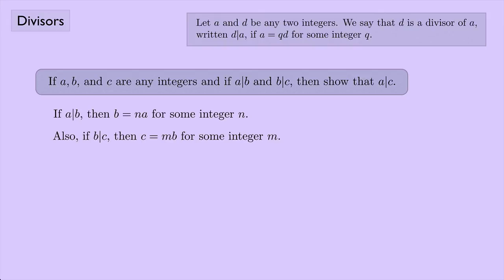Now we have C = MB and B = NA. Substituting NA for B, we get C = M(NA) = MNA. We can rewrite this as C = KA where K = MN is an integer. Since C equals some integer times A, this shows that A|C.